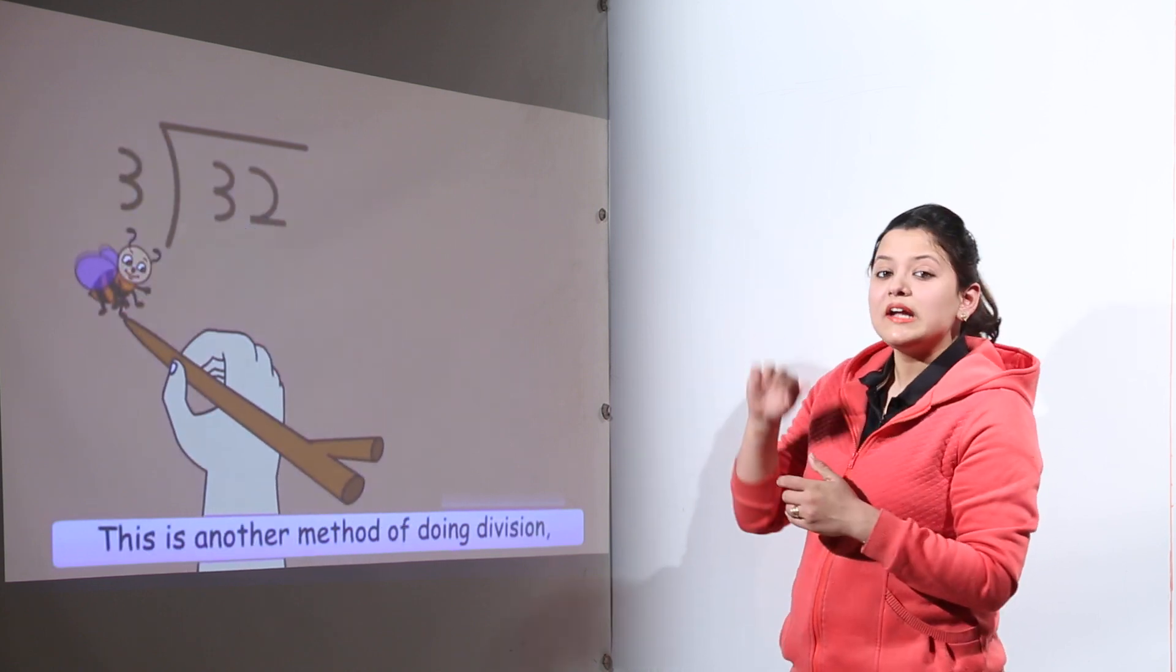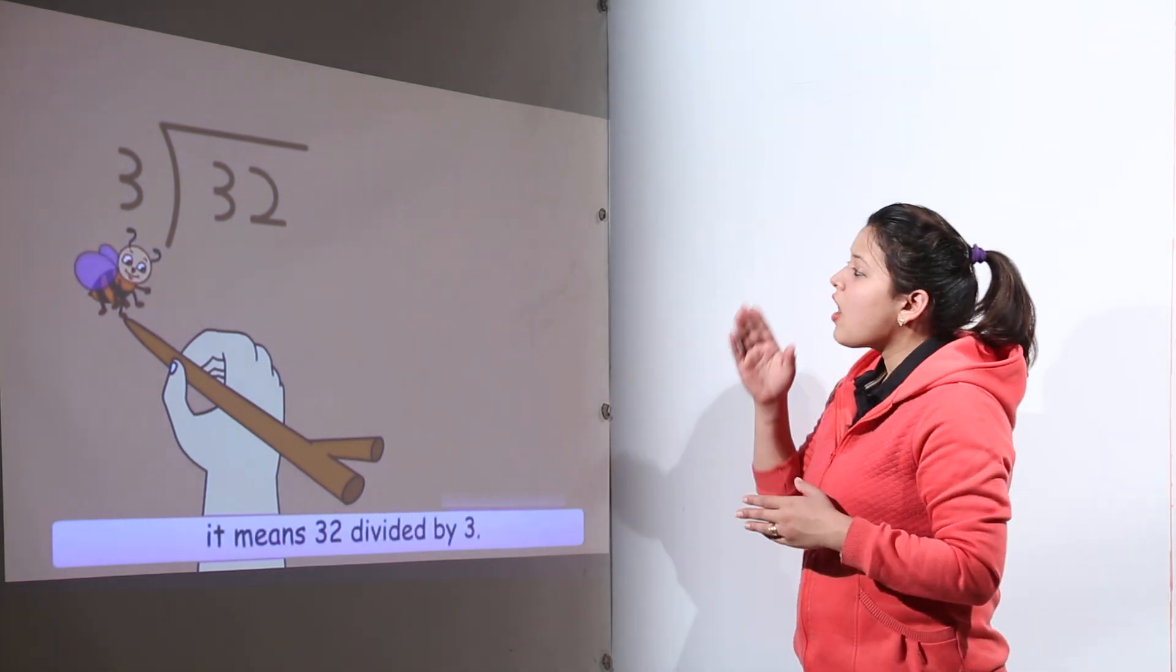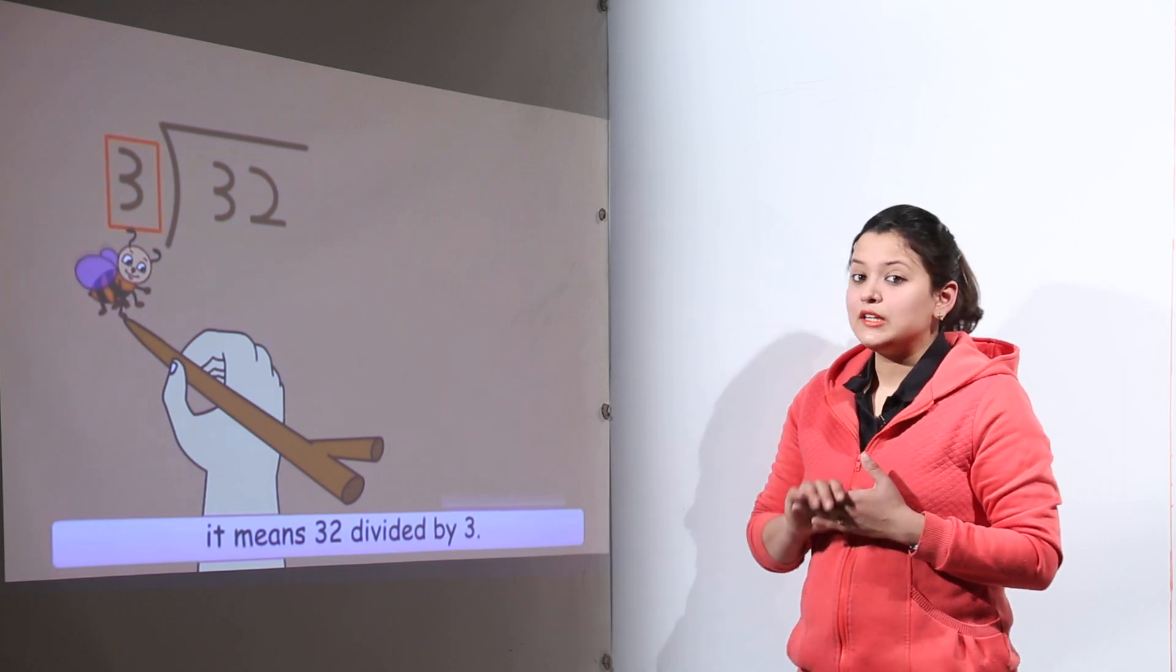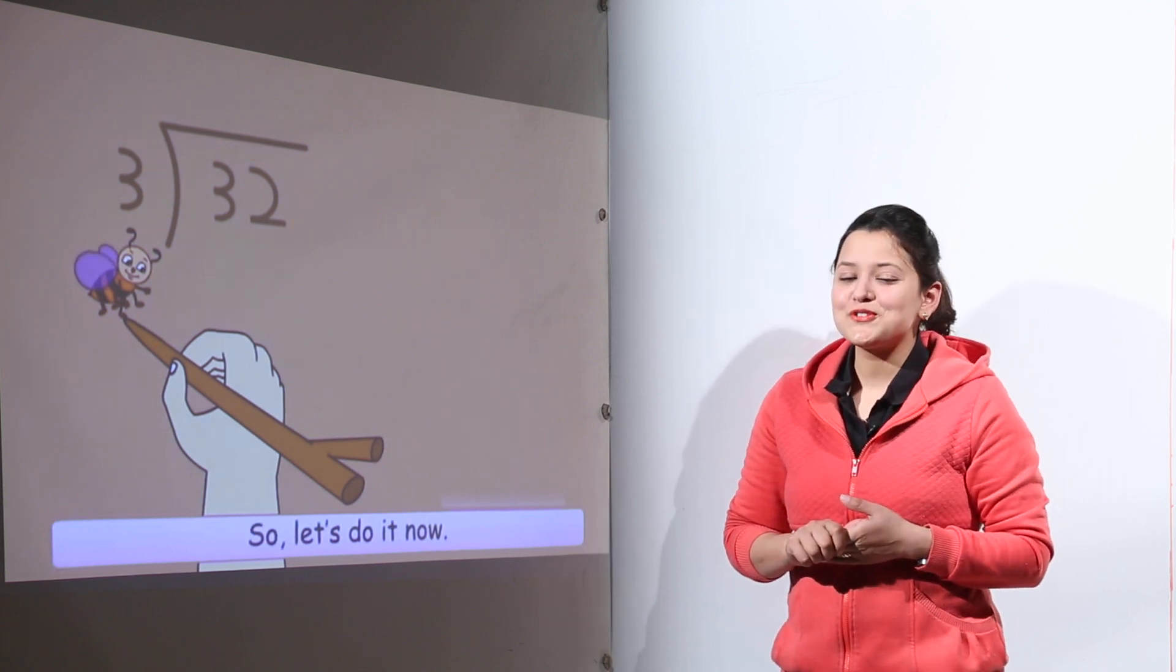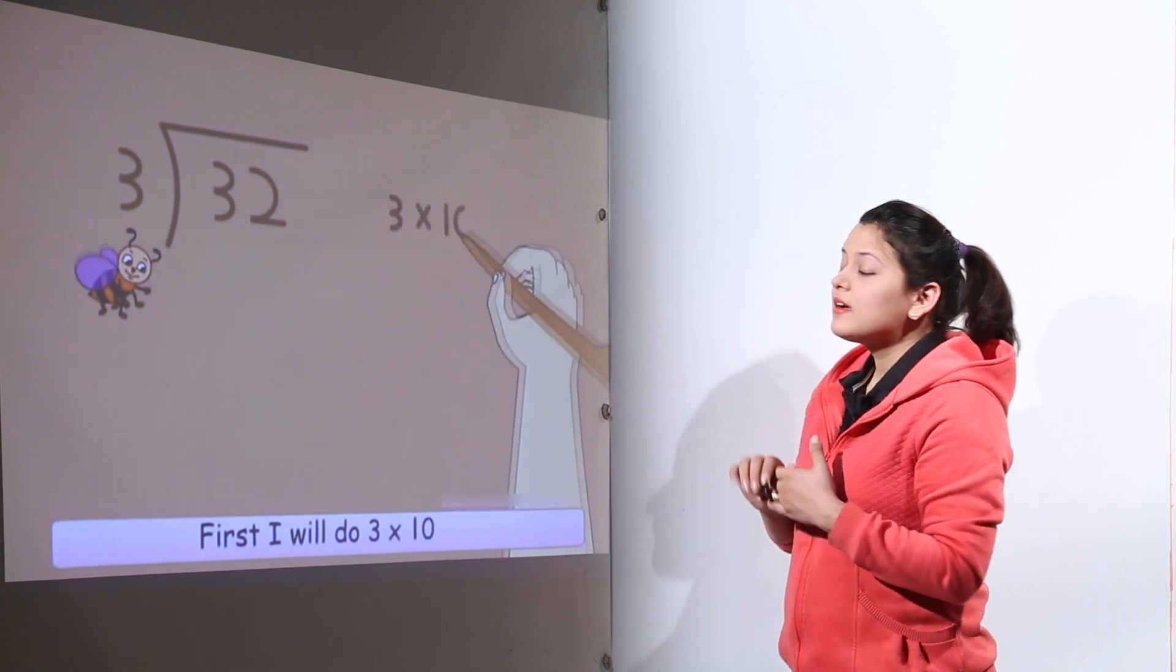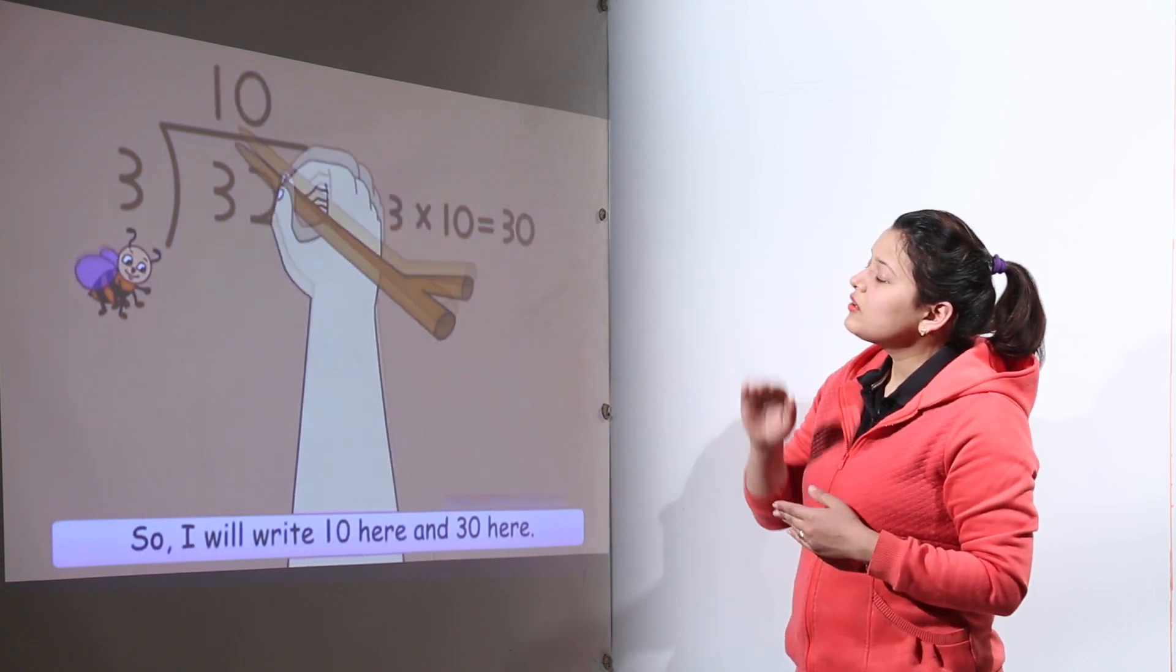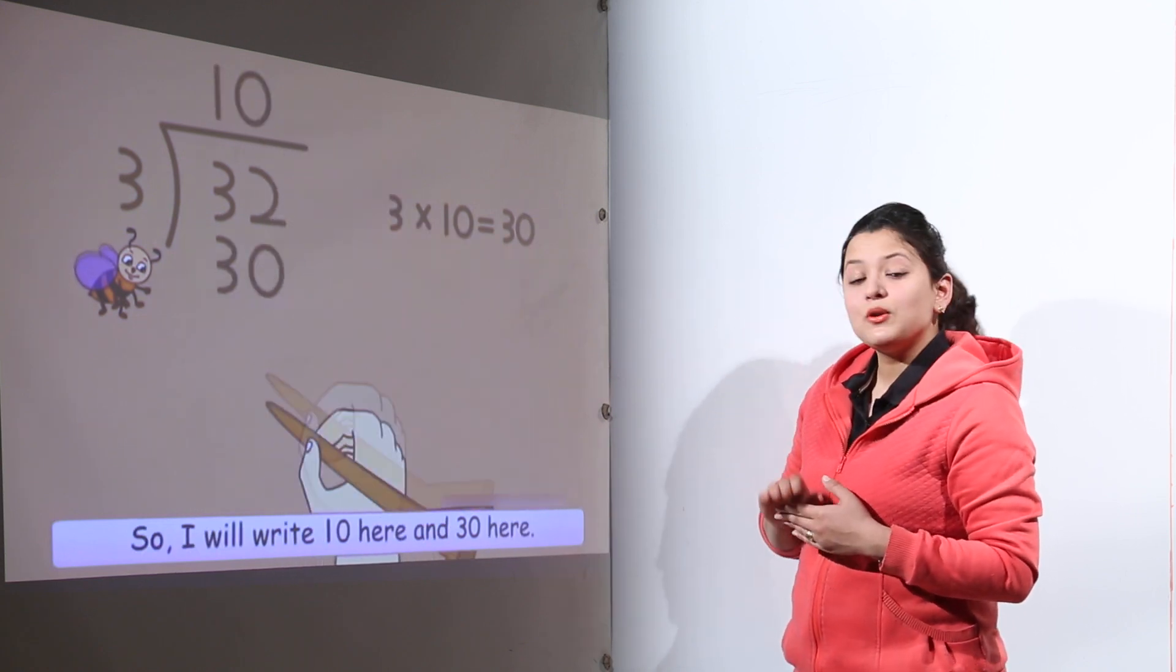Now in this we write 32 inside and 3 outside. Now the next step is to check how much 3 times would 32 go. And for that we must know the table of 3. Now we know that 3 tens is 30. So we can use this. Now when we know this we can put 10 over there and write 30 below 32.